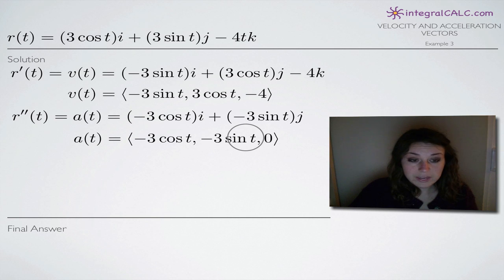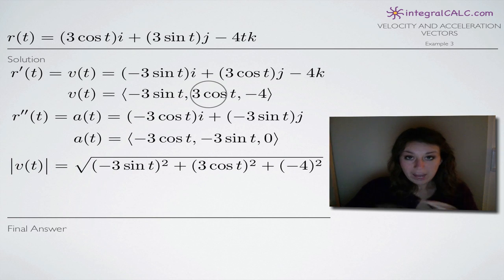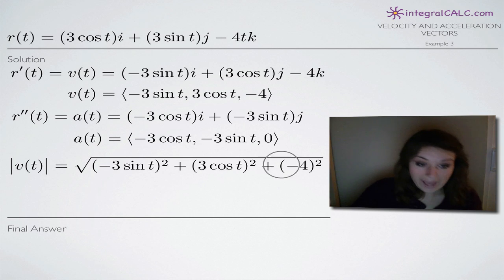And then to find speed, forget about acceleration for a second, go back to velocity. And we're going to look at the velocity vector here. We're going to take these three coefficients and we're going to square each of them, add them all together and then put them inside a square root sign. So you can see that we grabbed each one of these, we squared them, so negative 3 sine of t squared, 3 cosine of t squared, and negative 4 squared. We add them all together and we just throw a square root symbol over the top. That is the equation that gives us our speed.